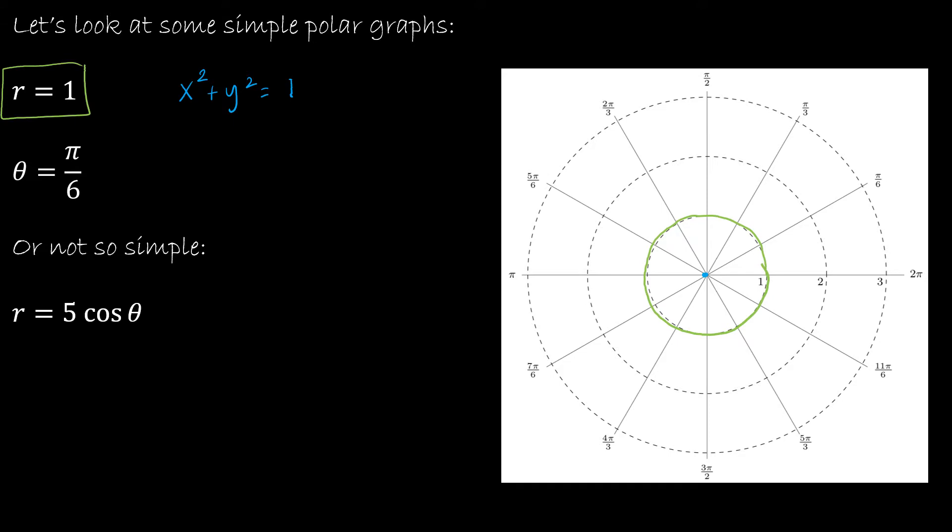The second one that is simple is theta equal pi over 6. So theta is equal to pi over 6 would be anything along the line pi over 6, both in the positive and in the negative direction. And again, we could turn this into a rectangular equation, and that's what we're going to look at next. So let's look at this not so simple. So these two I could graph without turning them into a rectangular equation. But 5 cosine theta, not quite so easy. So let's take a look at how I could turn that into a rectangular equation and therefore be able to graph it.